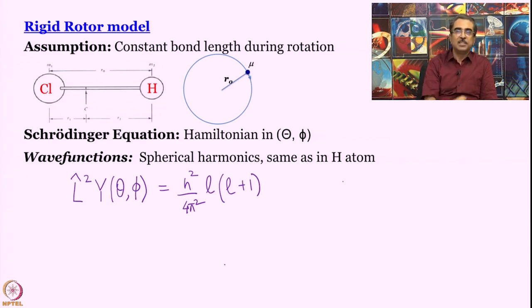They are eigen functions of the L square operator with eigen value of l into l plus 1 multiplied by h square, h by 2 pi, h cross, not really h square divided by 4 pi square. Here the difference with hydrogen atom is that this r is constant. So we can try to find out what is the rotation energy here. How? Remember the relationship between kinetic energy and angular momentum - it is L square by 2I, is not it? So if I take this L square operator and divide by 2I, what is I? I equal to mu r0 square. Then what do I get? I get h square by 4 pi square multiplied by 2I multiplied by l into l plus 1.